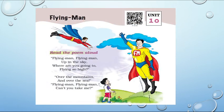The poem goes: 'Flying man, flying man, up in the sky, where are you going to fly so high?' There is a child who is saying that this is like a Batman or a Spider-Man — a flying man. The child is saying: 'Flying man, flying man, where are you going to climb up so high?'